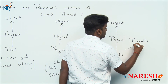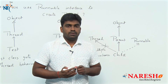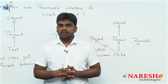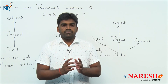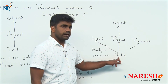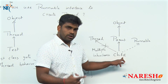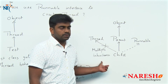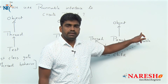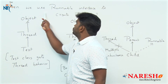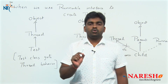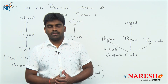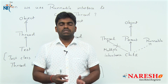In UML notation, the Runnable interface is shown with a dotted arrow — extending means a direct arrow, implementing means a dotted arrow. In an IS-A relation, if you want to apply thread behavior only to the child class, you cannot extend from the Thread class. The reason is that the child class is already extending the parent class, so one more extension is not possible as Java does not support multiple inheritance. You have only one option: implementing the Runnable interface. So when we use the Runnable interface to create a thread, it is to apply thread behavior only to the child class in an IS-A relation. Thank you all for watching. Please subscribe to the Naresh IT channel.